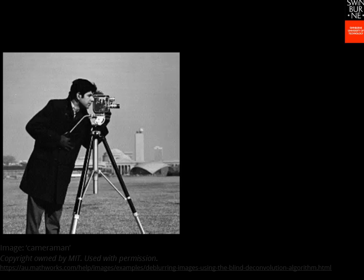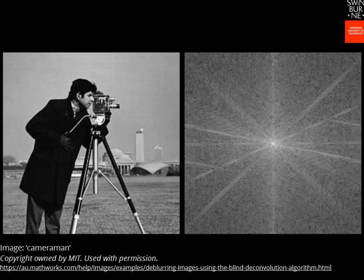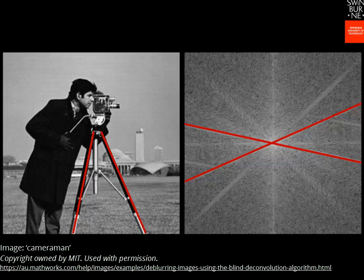We can also take the Fourier transform of more complex images. This image is very famous in the image processing community, and here it is in the frequency domain. The lines in the frequency domain image correspond to the legs of the tripod and the line of the horizon.